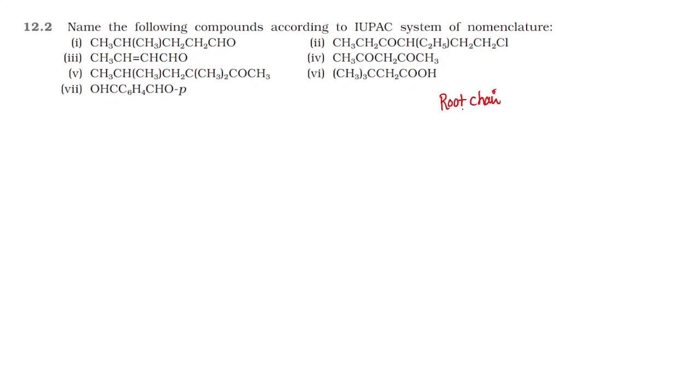What is the root chain? The longest chain. 5 carbon is called pent, 6 carbon is called hex. We use root plus suffix 1 plus suffix 2, then prefix 2 plus prefix 1.